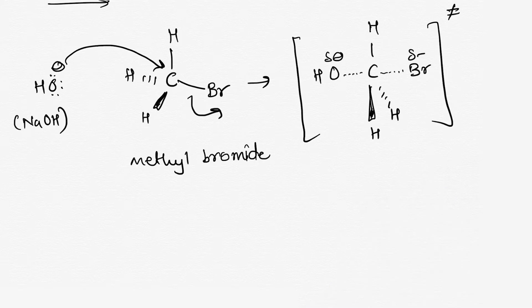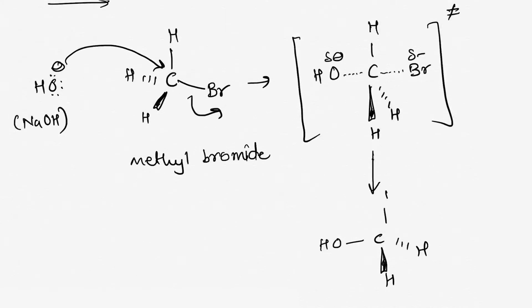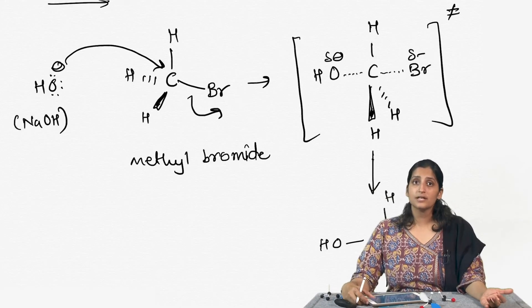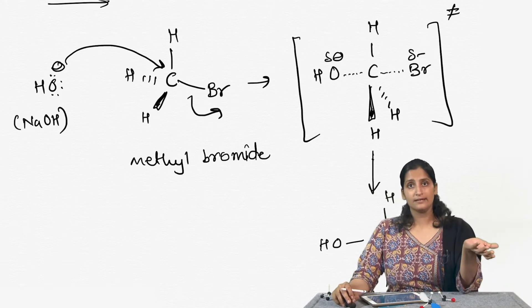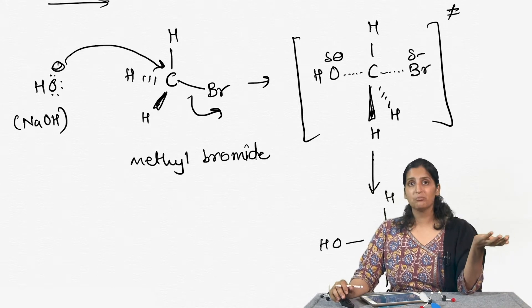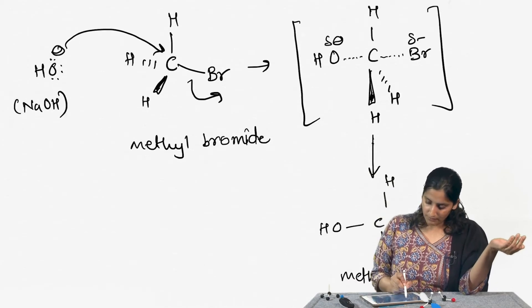When this reaction ends, you end up creating a new bond between carbon and oxygen, creating methanol. One of the key things to pay attention to is that the nucleophile attacks from the backside of the carbon-bromine bond — it attacks from the back side of this carbon-bromine bond.